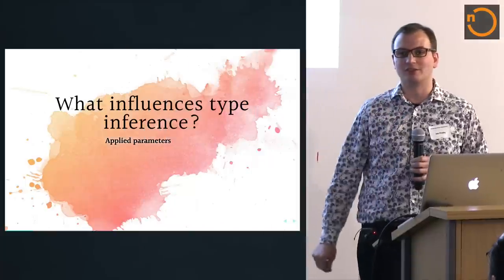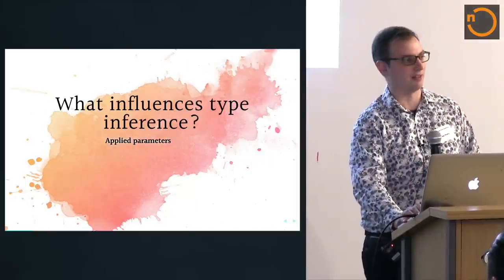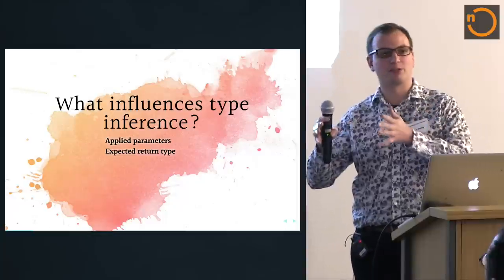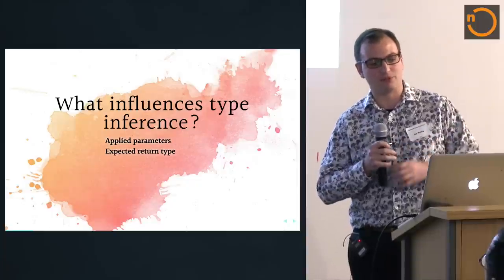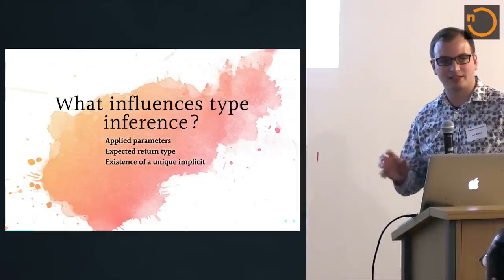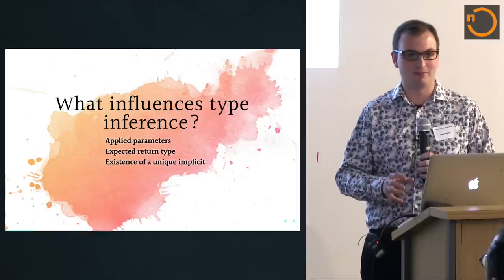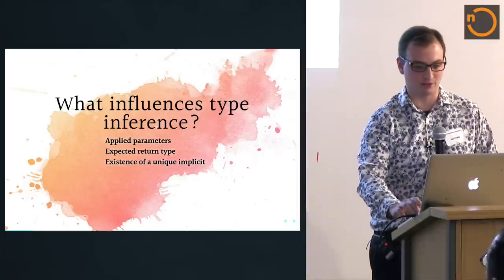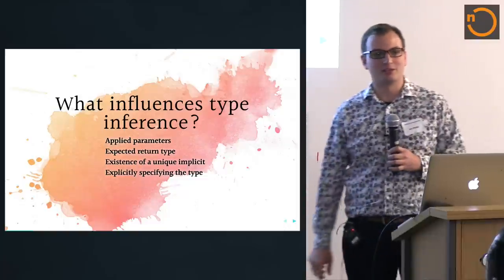So what are the things that may influence type inference? The compiler is doing it all the time whenever it evaluates a polymorphic expression. If you apply a parameter to something, that will influence the type in that expression. If there's an expected return type — if you're putting an expression in a parameter position where the type of that parameter is known — that becomes the expected return type and can influence how the expression is evaluated. If there's a unique implicit in scope, that can force it down a certain route. And of course if you write the type explicitly in square brackets, that will very strongly influence what the type is.